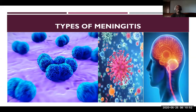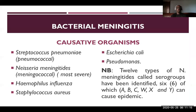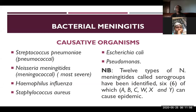The causes of meningitis relate directly to the types. If the cause is viral, there will be viral meningitis; if bacterial, bacterial meningitis. Looking at bacterial meningitis first: it is not the most common of all the meningitides, but it is the most dangerous. The causative organisms include Streptococcus pneumoniae — also known as pneumococcal meningitis — and Neisseria meningitidis, known as meningococcal meningitis. Meningococcal meningitis is the most common among the bacterial meningitides, and also the most severe form.